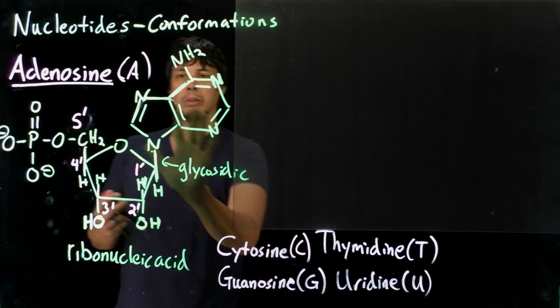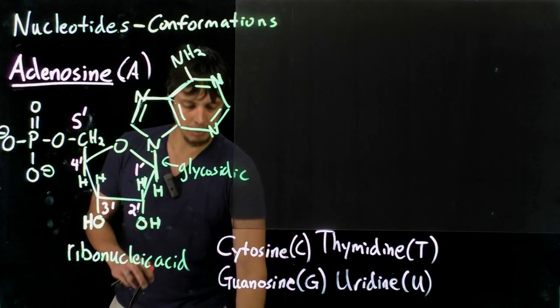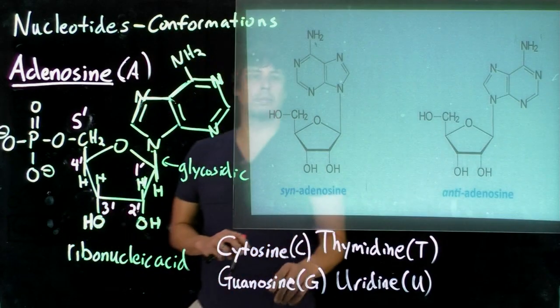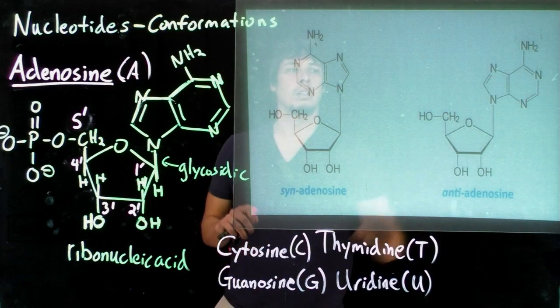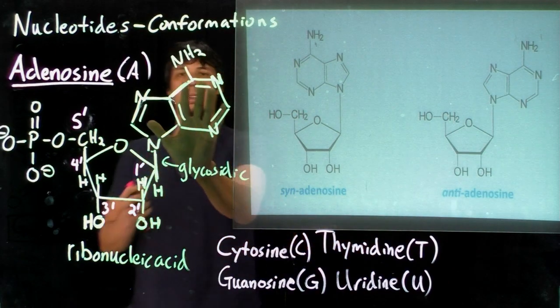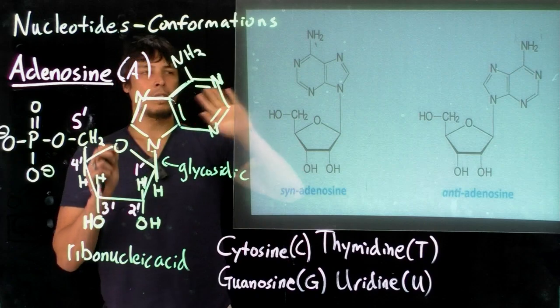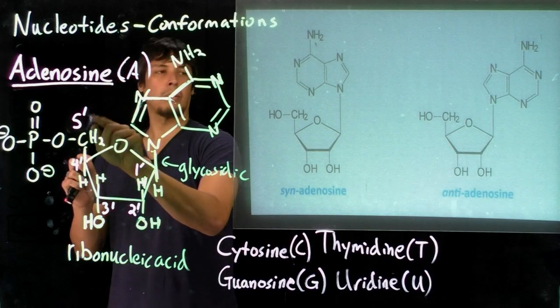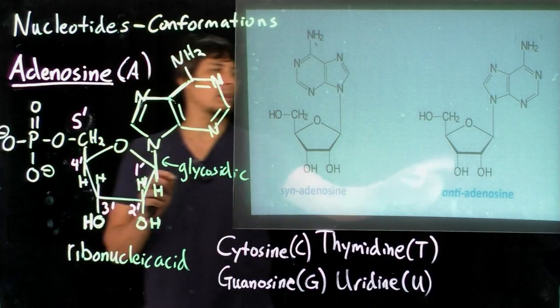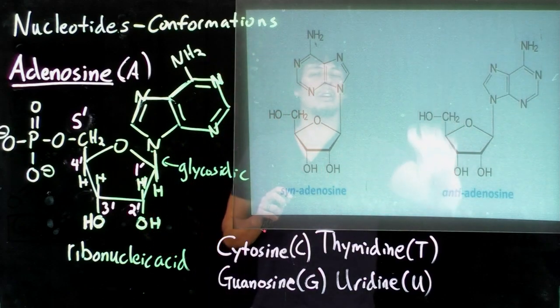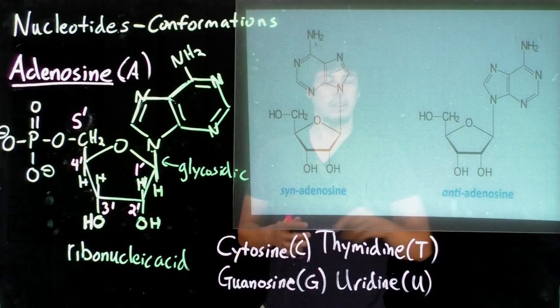So it can either be in this conformation, which is shown, which is called the anti-conformation. So what that means is that the bulk of the ring is facing away from the five prime carbon. Another picture is shown here in the schematic, where we have the anti-adenosine.